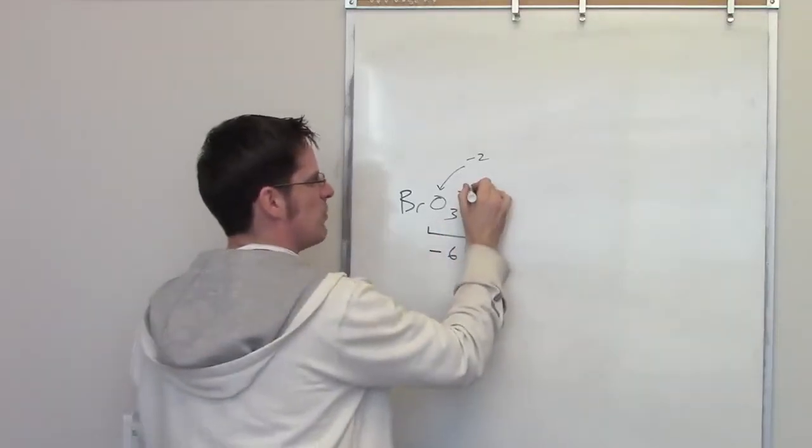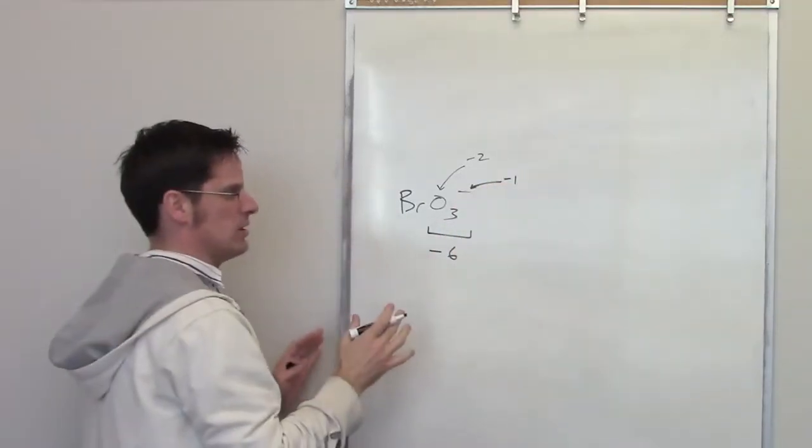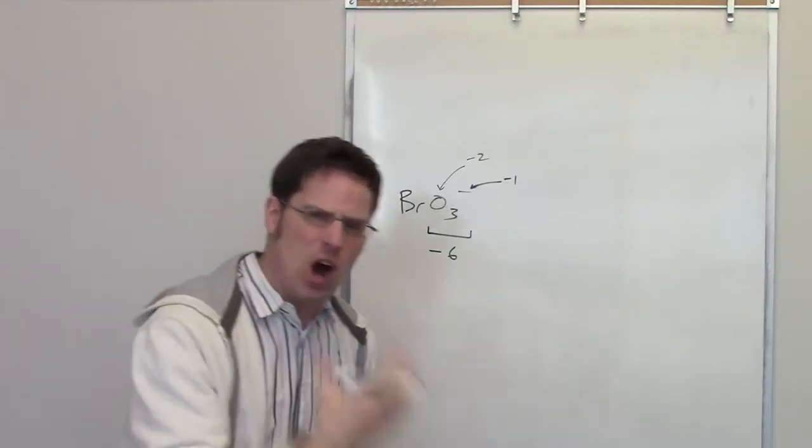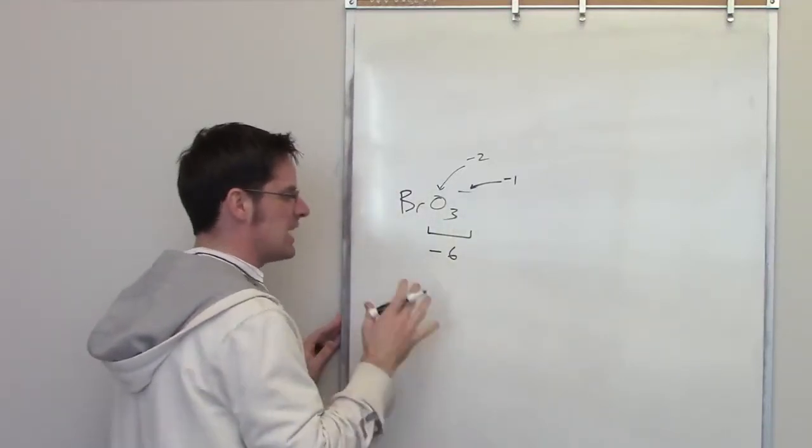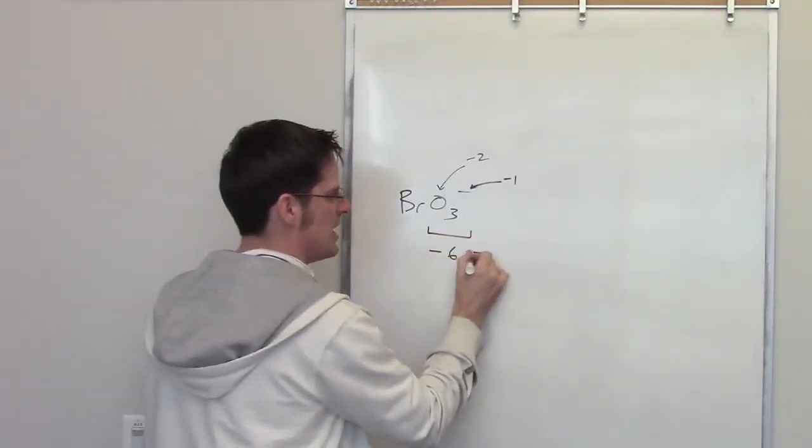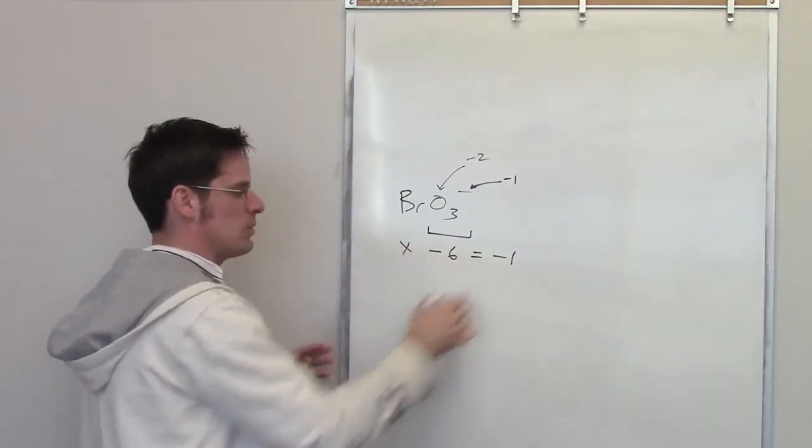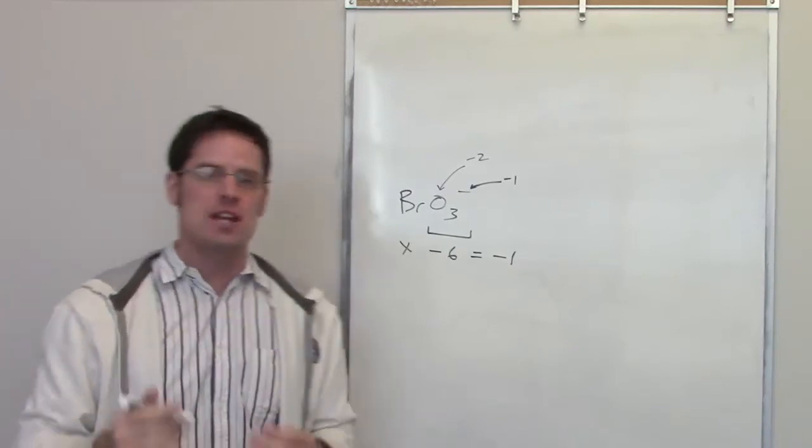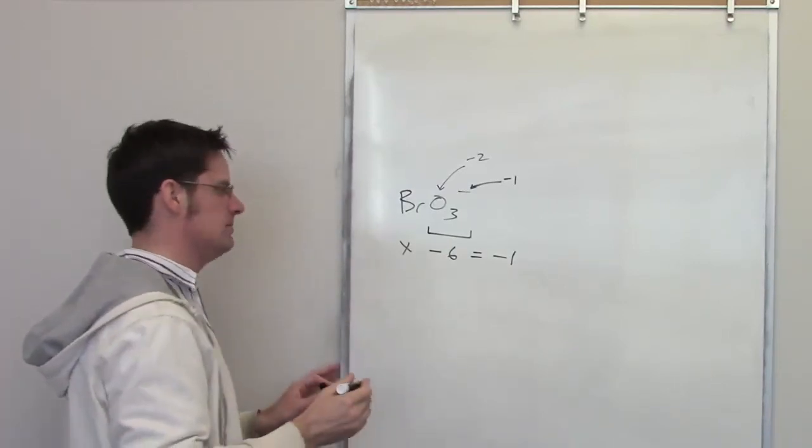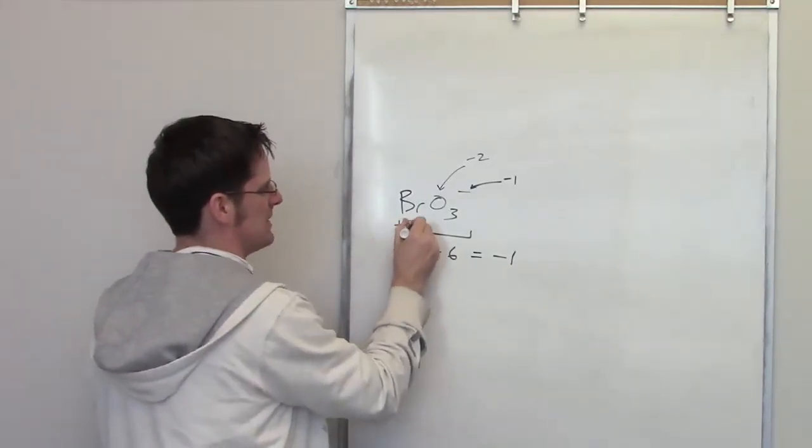Well, you'll notice that there's a negative one charge right here. So bromine has to have an oxidation number that, when added to negative six, leaves negative one. In other words, if I put x here, x minus six equals negative one. X is going to be the oxidation number of bromine. What is that? Well, obviously, it's positive five.